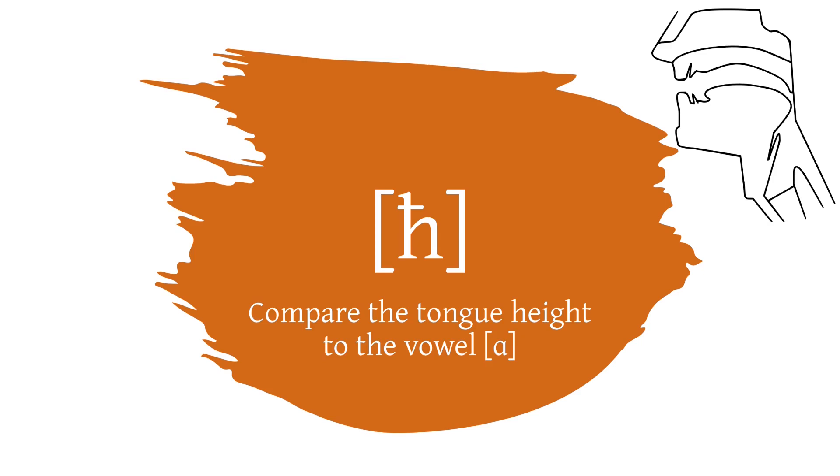If you're not sure if the sound you hear or pronounce is a pharyngeal fricative, you may compare it to the vowel aa. From the position of aa, retract your tongue as much as you can, and your tongue root will approach your pharynx to the point of friction. Now you can be sure that you're pronouncing a pharyngeal fricative.